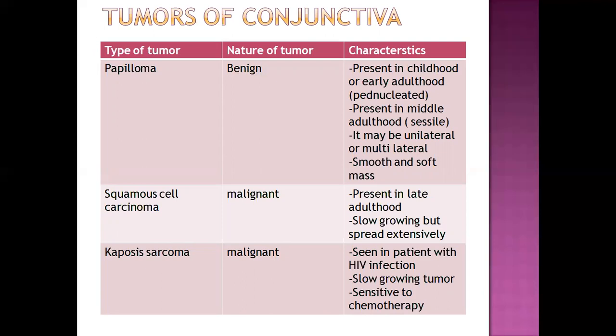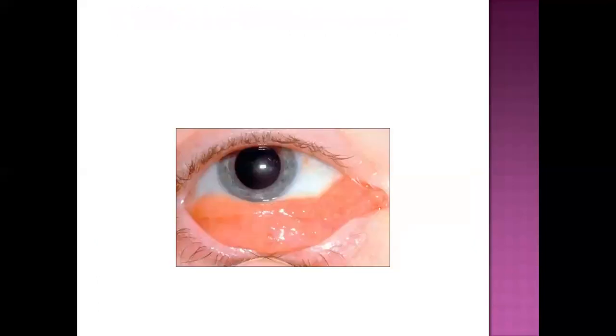Squamous cell carcinoma of the conjunctiva is present in late adulthood. It is slow growing but spreads extensively. Kaposi's sarcoma is seen in patients suffering from HIV infection. It is a slow growing tumor and is sensitive to chemotherapy. When there is a tumor in the conjunctiva, the conjunctiva may look affected as shown.